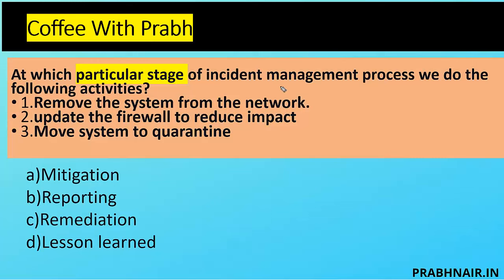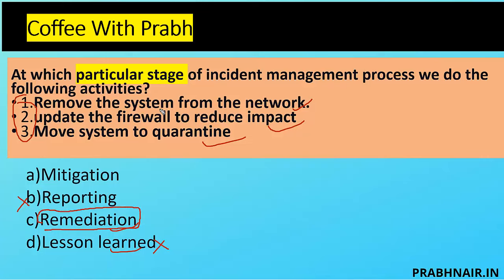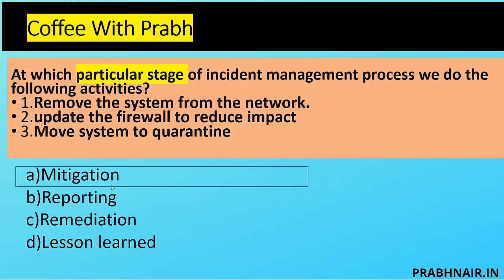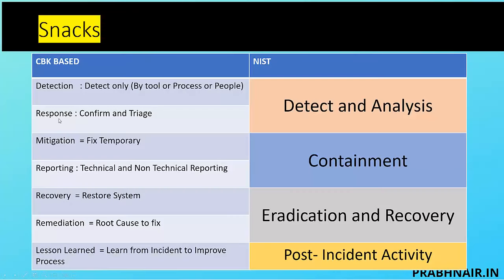Coffee shot: at which stage of the incident management process do we remove the system from the network, update the firewall to reduce impact, and move the system to quarantine? All three activities are temporary. Option A is mitigation, option B is reporting, option C is remediation, option D is lesson learned. Lesson learned is removed because we're still dealing with the incident. Reporting is removed — these activities aren't part of reporting. Remediation is a permanent solution; mitigation is temporary. So the answer is A — mitigation.